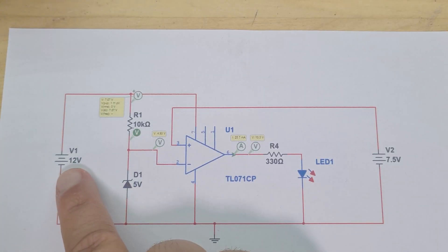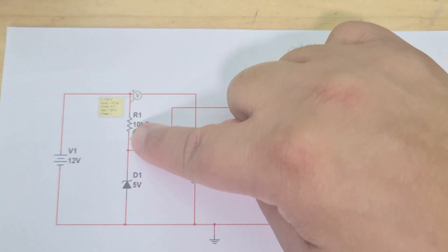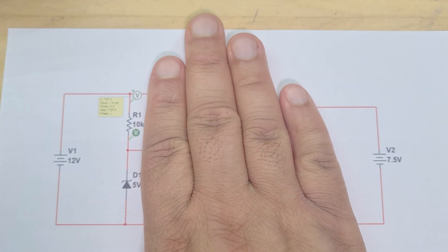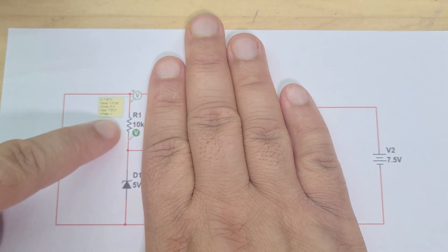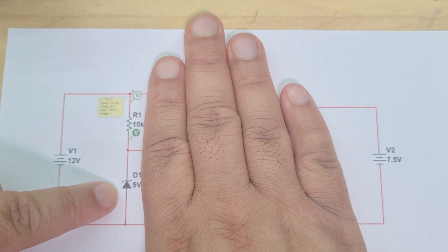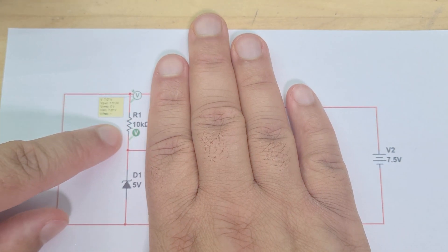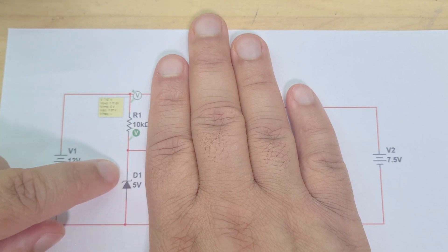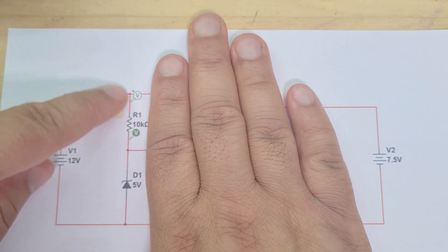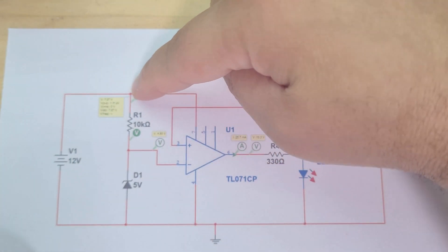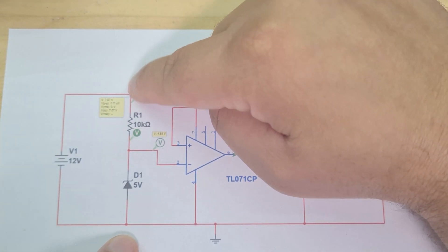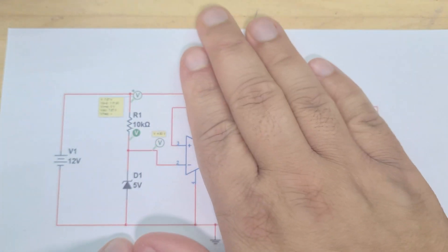Whatever value this resistor is, it has to drop 7 volts across it because I've got 12 volts from this point here to here, 12 volts across this whole network. So I'm gonna have a 7 volt drop across here and then 5 volts across there. It's always gonna be 5 volts across here.